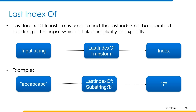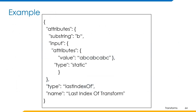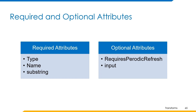Now let's understand how to build a transform using this operation. The example can be built in this format where the name of the transform is last index of transform and type is last index of. Input is provided in the input attribute and substring B is provided to get the index. The last occurrence of letter B is at index 7, so the value 7 is returned as output. The required attributes are type, name, and substring. The optional attributes are requires periodic refresh and input.